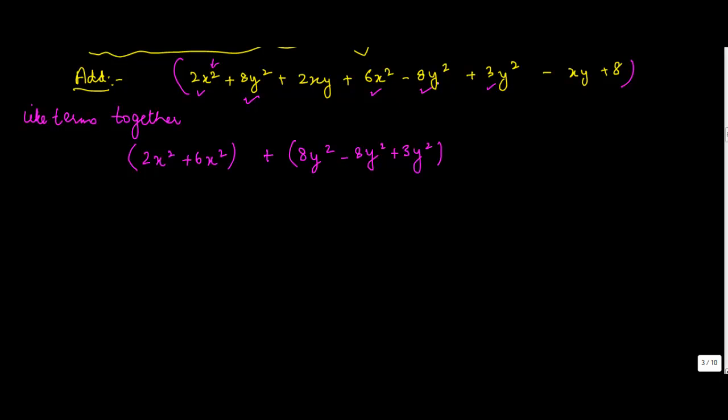So what are we doing? We are just putting all the terms which have common literals together. Then you have 2xy plus 2xy. xy is a different stuff, so we are just not mixing up with the first two. Then we have -x²; any other? No. Plus 8.